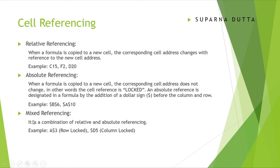In mixed referencing, we lock either the row or the column but not both. For example, in a reference like A$3, there is no dollar sign before the column name, so the column is not locked but the row is locked. In another example, the column is locked but the row is not locked.